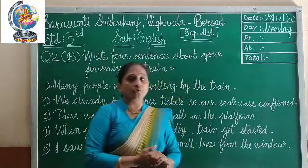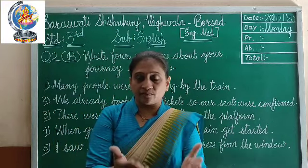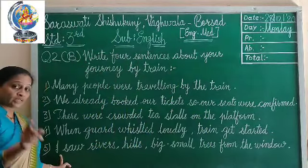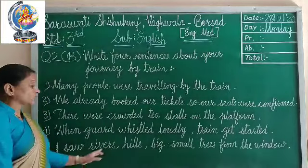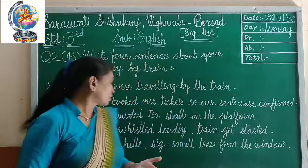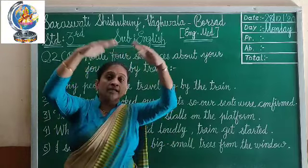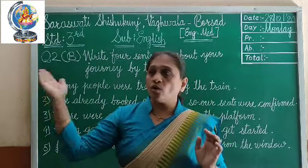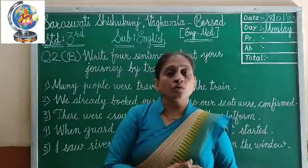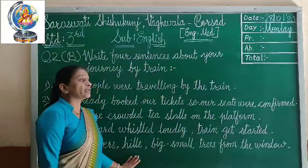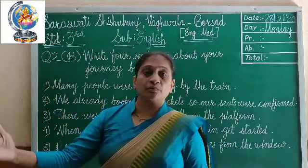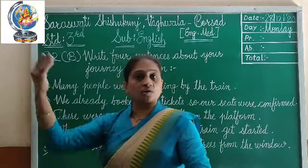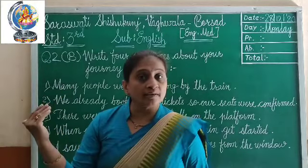From the window I saw rivers, big and small trees, hills, and mountains. When you are writing your paragraph about your journey by train, you should mention 'I' — telling about yourself. From the window you can see all the natural things outside, and you can also see another train crossing or passing by your train.